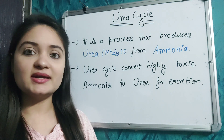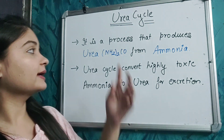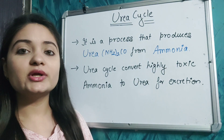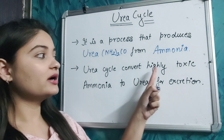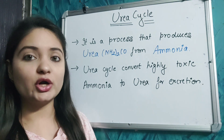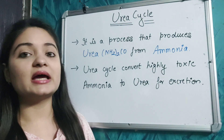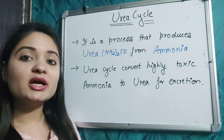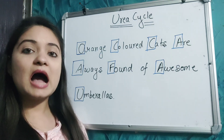First, I will give you a brief introduction of the urea cycle. The urea cycle is a process that produces urea from ammonia. It converts highly toxic ammonia to urea for excretion. Ammonia is a very toxic and dangerous substance in our body, which is why it is converted into urea. Urea is less toxic and is easily excreted out from our body.